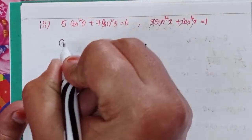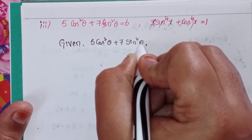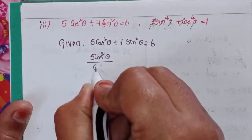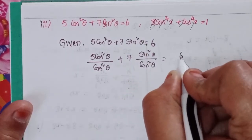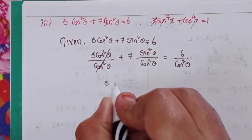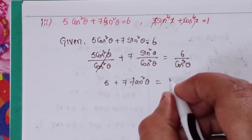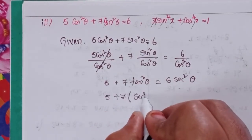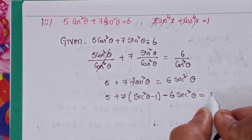Next, third problem: given 5 cos theta plus 7 sin squared theta equal to 6. Dividing through by cos squared theta: 5 cos theta divided by cos squared theta plus 7 sin squared theta divided by cos squared theta equal to 6 divided by cos squared theta. These simplify: 5 plus 7 tan squared theta equal to 6 sec squared theta.